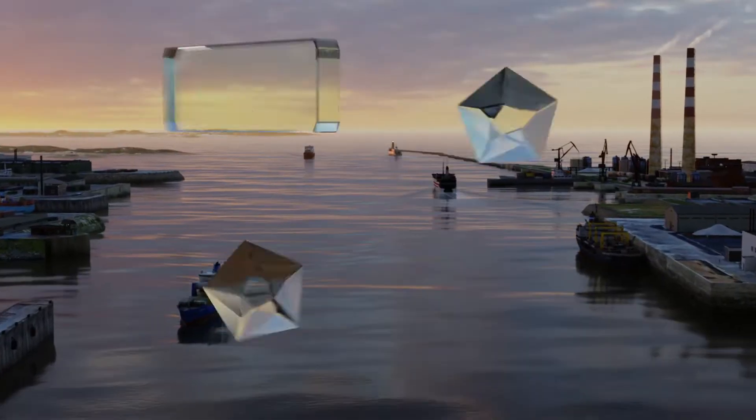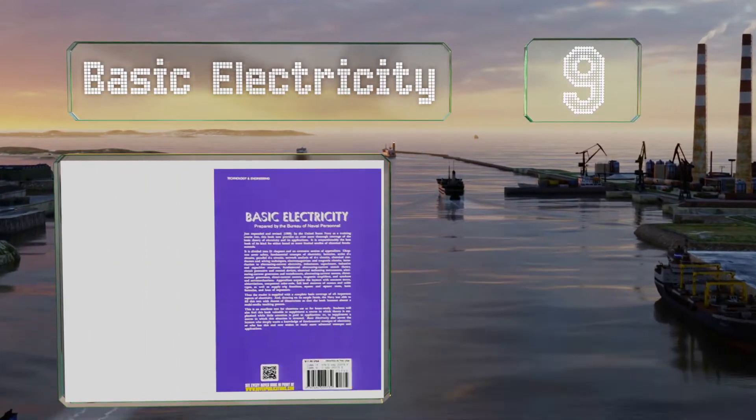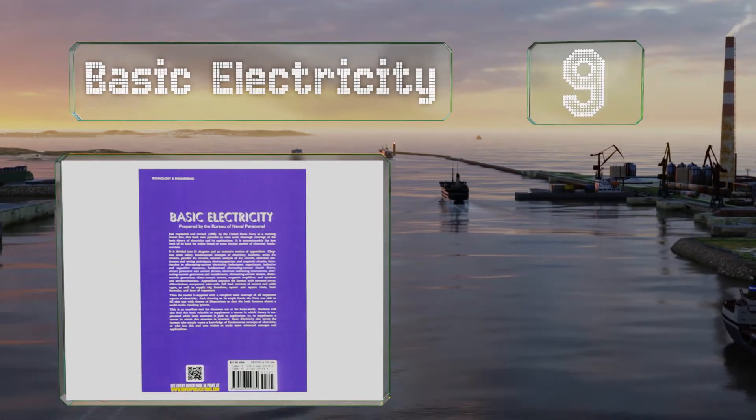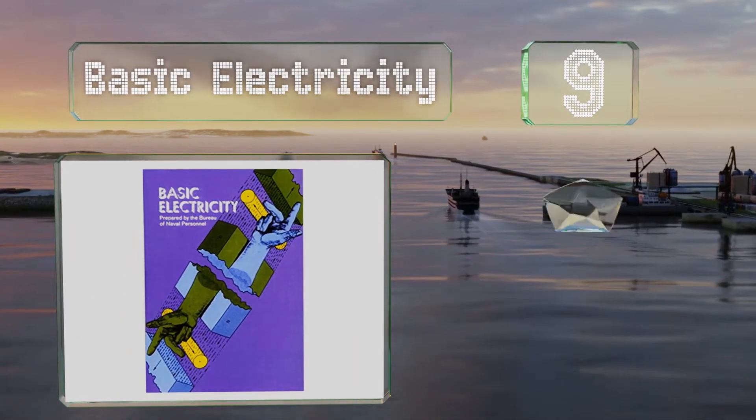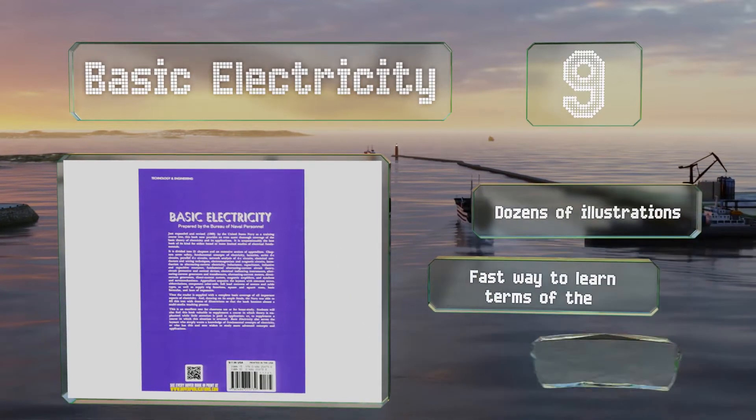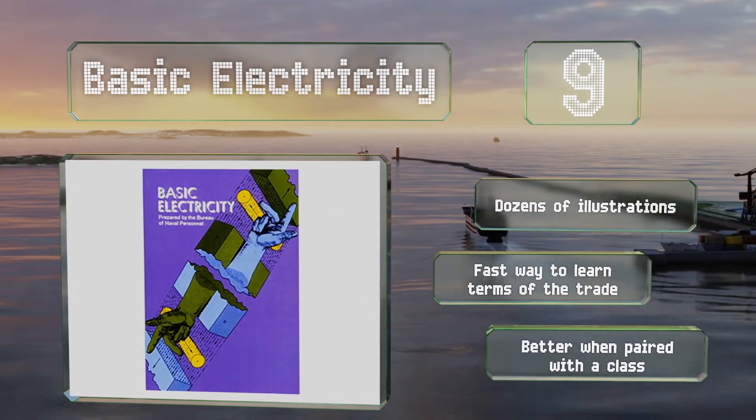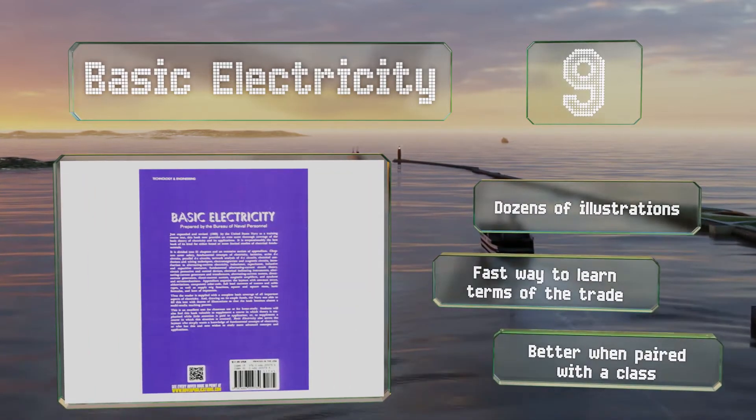At number 9, Basic Electricity was prepared by the Bureau of Naval Personnel and is designed as a primer for anyone who needs to establish a foundation in all things electrical. There's an emphasis on safety as well as a wealth of useful appendices. It includes dozens of illustrations and is a fast way to learn the terms of the trade, but it is better when paired with a class.